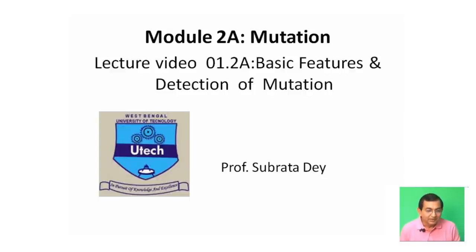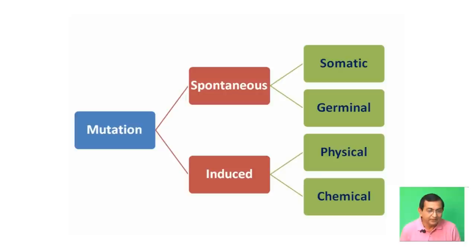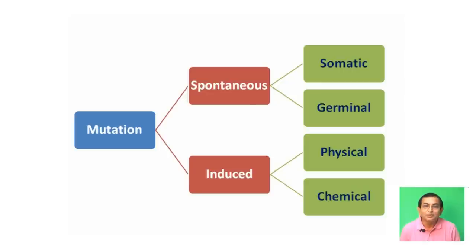Mutation is classified mainly into two types: spontaneous and induced. Spontaneous mutation means naturally occurring mutations. Naturally occurring mutations are very rare, which may be produced by some external agents. Spontaneous mutations are further classified into two types: somatic and germinal.